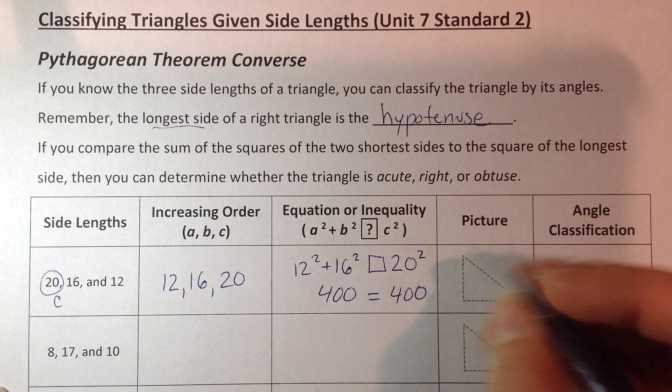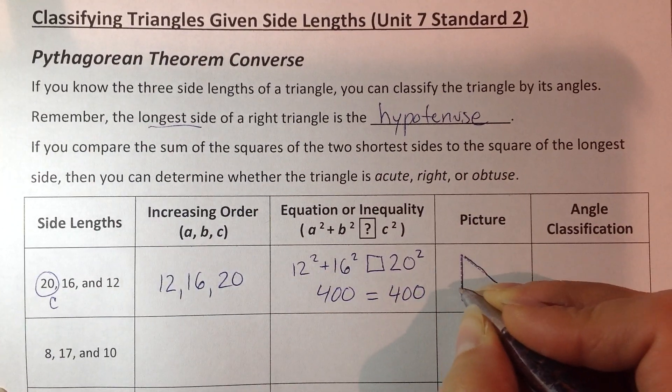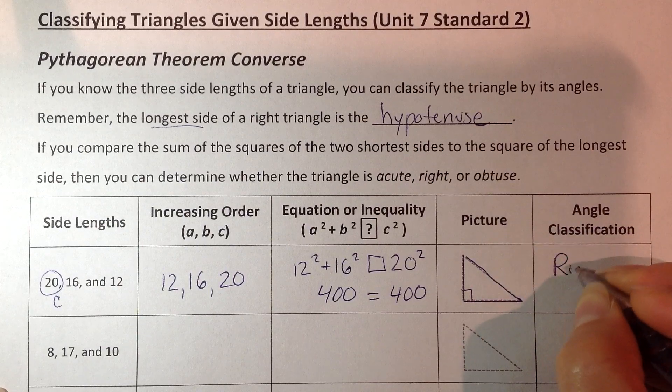So in this case, they're actually equal, so that's your Pythagorean Theorem, right? So this is going to be a right triangle.